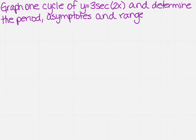We want to graph one cycle of y equals 3 secant 2x. We need to determine the period, the asymptotes, and the range. There are a couple of different ways to start. We can start with the graph of secant and progress through what each modification looks like, and that will get us to where we're going.